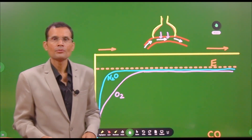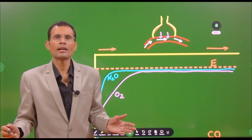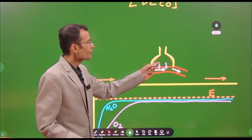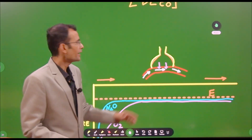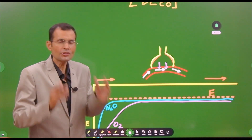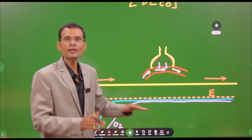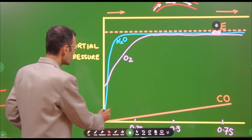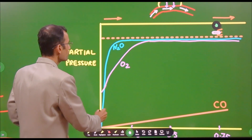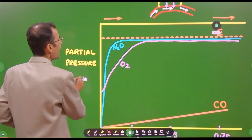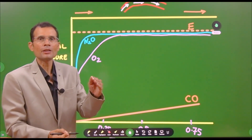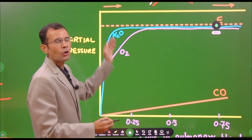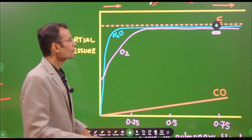Take N2O — nitrous oxide, used as an inhalational anesthetic. You give N2O by inhalation, it reaches the alveolus, and then instantly diffuses into the pulmonary blood. Its partial pressure in the blood rises instantly and it reaches equilibrium, so further diffusion stops. In the graph, N2O is shown rising almost immediately — the dotted orange line shows the equilibrium level. N2O has reached equilibrium almost instantly, and then its diffusion stops.